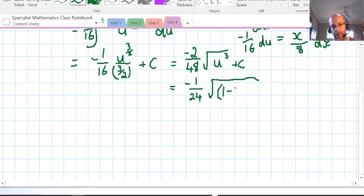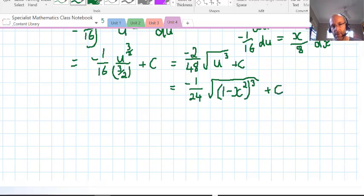Simplifying and subbing back in in terms of x now, we have 1 minus x squared, and that's all cubed, plus C.